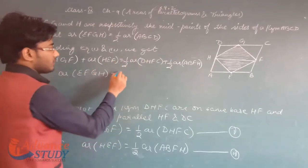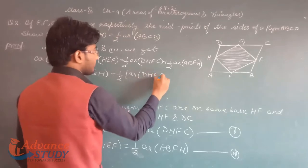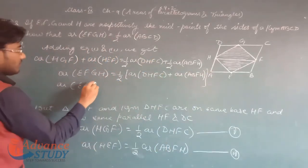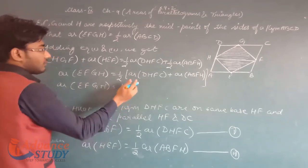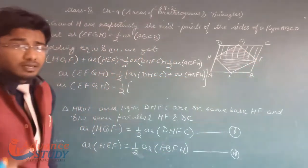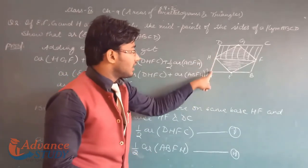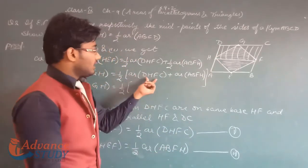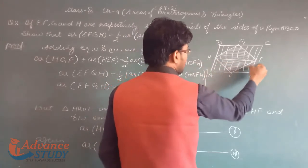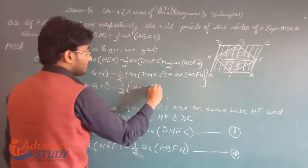Taking 1/2 common from the right-hand side: area of EFGH = 1/2 × (area of DHFC + area of ABFH). When we add area of DHFC and area of ABFH, we get the complete parallelogram ABCD. So area of EFGH = 1/2 × area of ABCD.